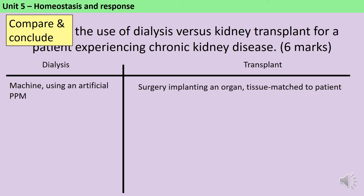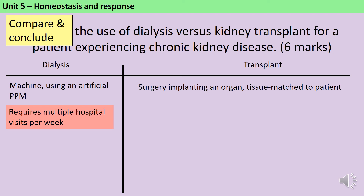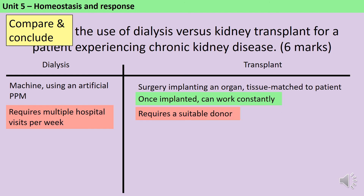Dialysis is really time consuming — you need to go to hospital multiple times a week, which can affect employment prospects and general quality of life. On the other hand, if you have a transplant, once that organ is inside you it's going to be working all the time, and although you'll need regular checkups, these won't be nearly as frequent as dialysis visits. On the other hand, there are a whole range of disadvantages to transplants. You need a suitable donor — there may be someone in your close family who is a tissue match and willing to give one of their two kidneys, but more likely you may have to wait for an organ donor to die in a road traffic accident, which can be a really long waiting time.